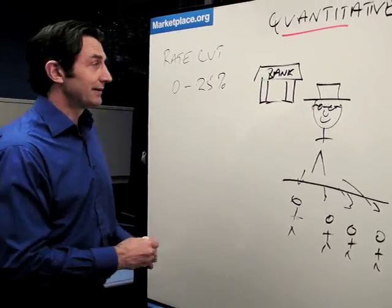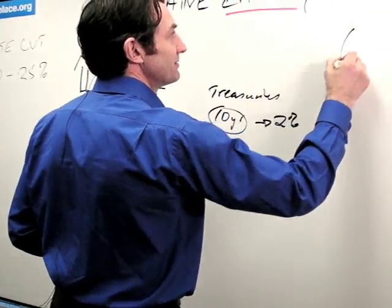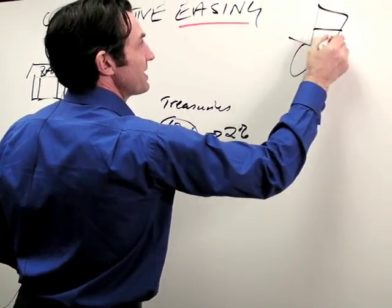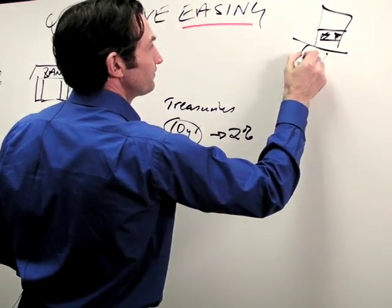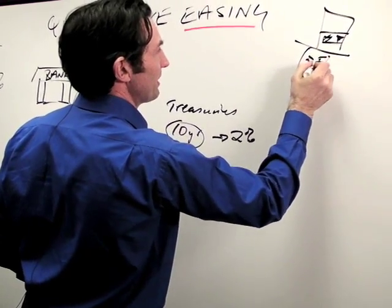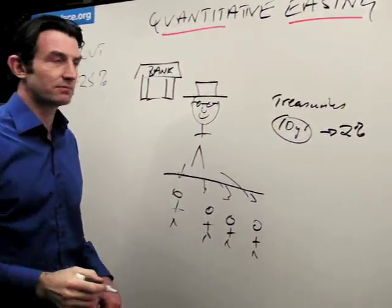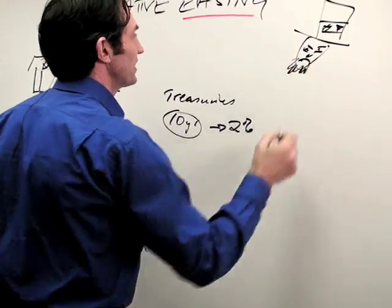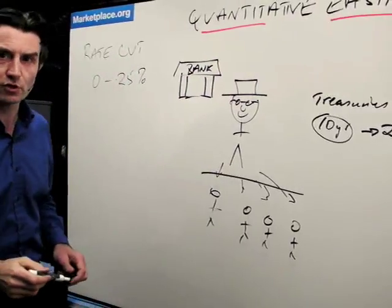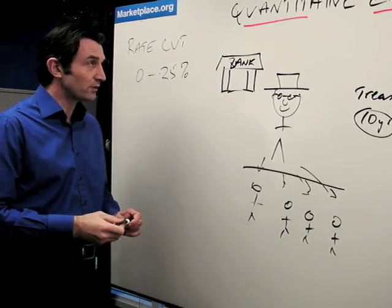So the Federal Reserve, and that's old Uncle Sam over here, his top hat, he's not happy about this at all. And so he has decided, Chairman Ben, he's decided to go out and do what's called quantitative easing. So what is that?